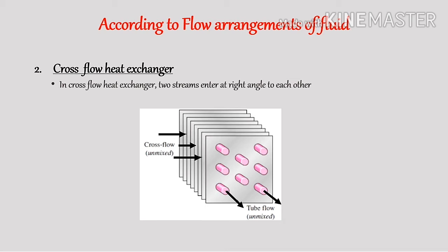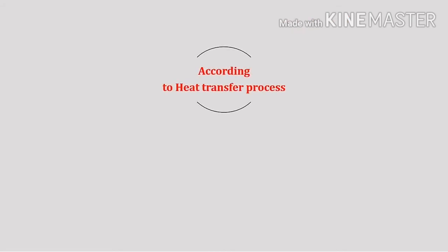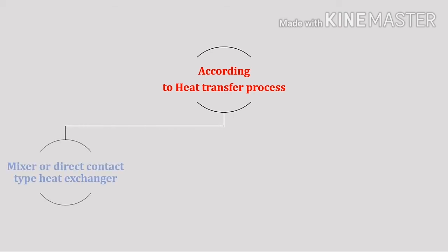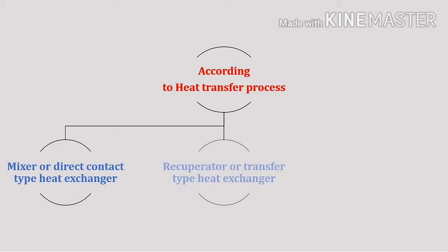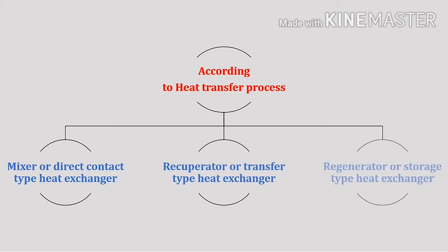Now let's see the classification of heat exchanger based on the next criteria: according to the heat transfer process. Based on this criteria, heat exchangers are classified mainly into three types: first, mixer or direct contact type; second, recuperator or transfer type; and third, regenerator or storage type heat exchanger.